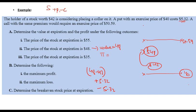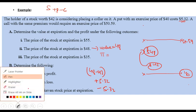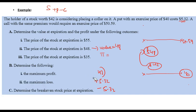Remember: if the premiums are different, you must add the call option premium received and subtract the put option premium paid when calculating profit. In this case, both are equal so they cancel, giving a profit of $6.